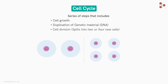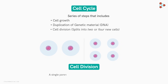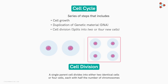What exactly is cell division? As the name suggests, cell division is the process in which a single parent cell divides into either two identical cells, or four cells each with half the number of chromosomes. So yes, the process of cell division is indeed a part of the cell cycle.